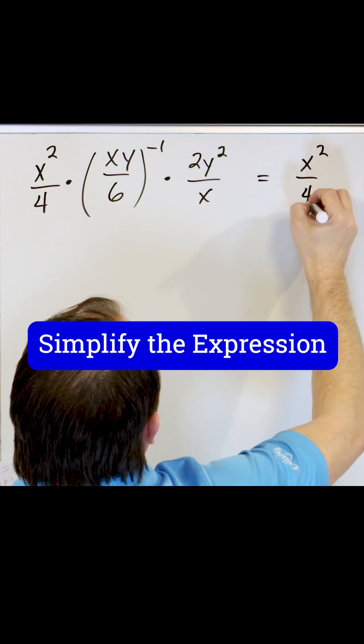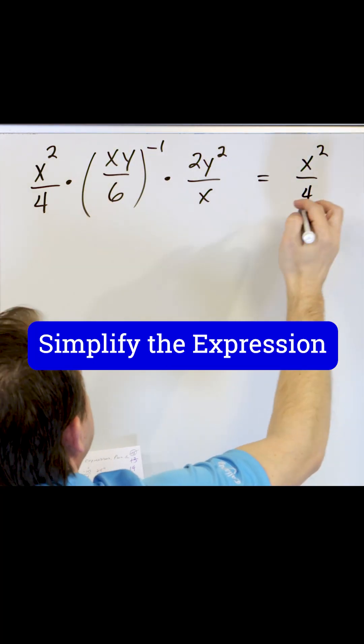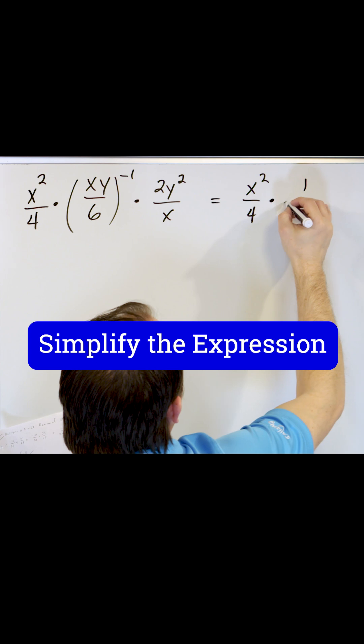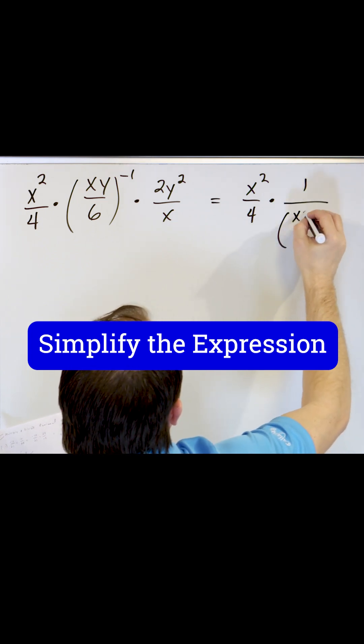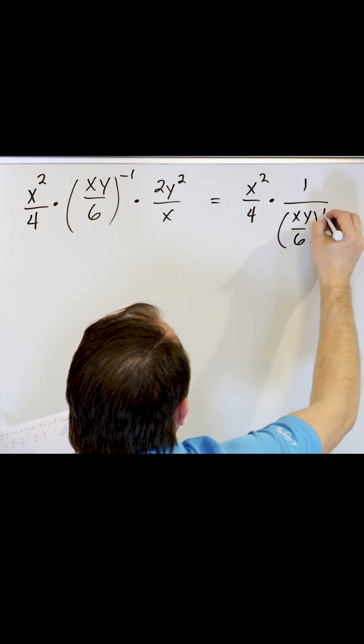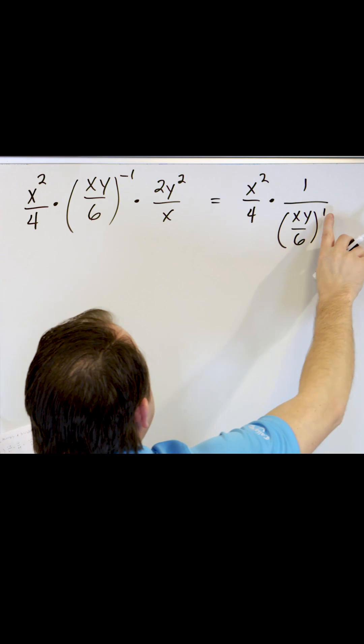x squared over four, remember the negative one just means that it's one over xy over six to the first power. We just move it to the denominator and make it a first power.